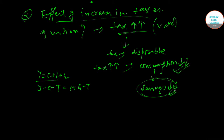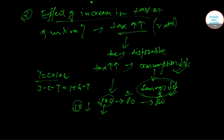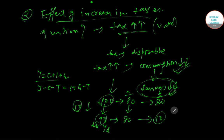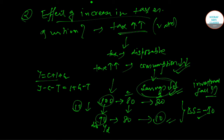For example, suppose income is fixed at 100 rupees and the family is consuming 80 rupees, meaning they are saving 20 rupees. Now suppose the government imposes a tax of 10 rupees. Disposable income becomes 90 rupees. Since their consumption remains at 80, their savings fall to only 10 rupees — a fall in saving of 10 rupees. If savings fall, it means investment will also fall.